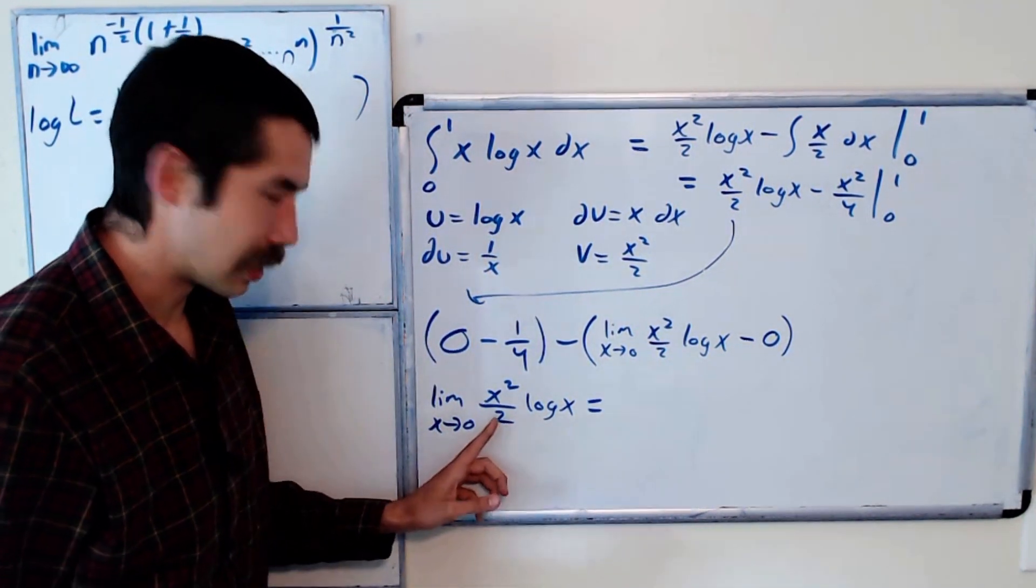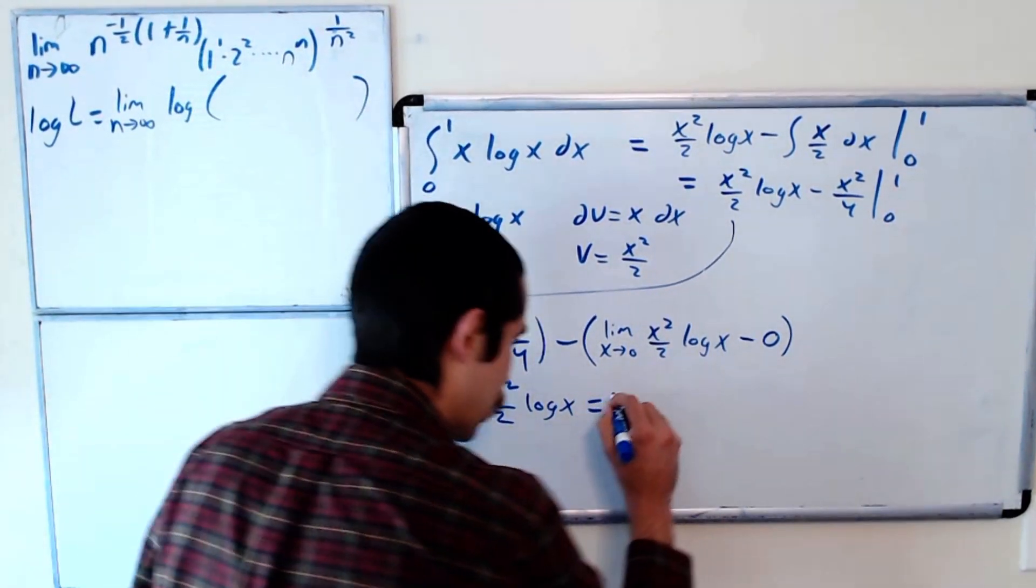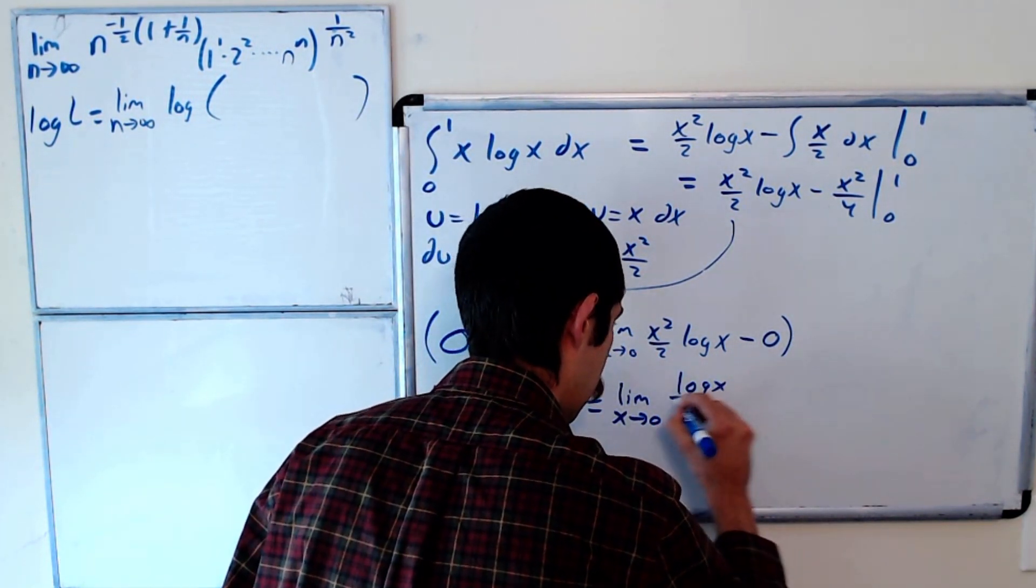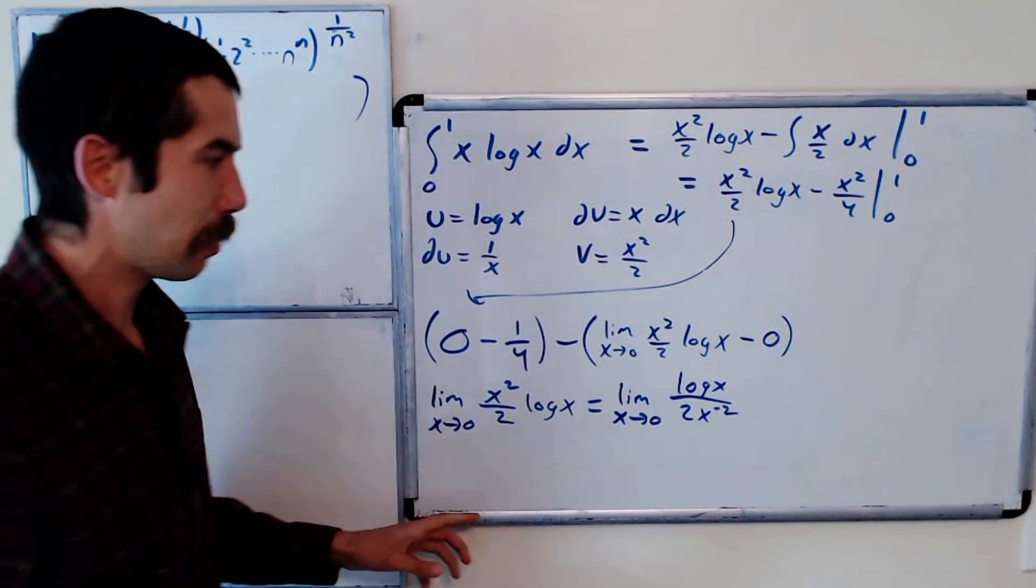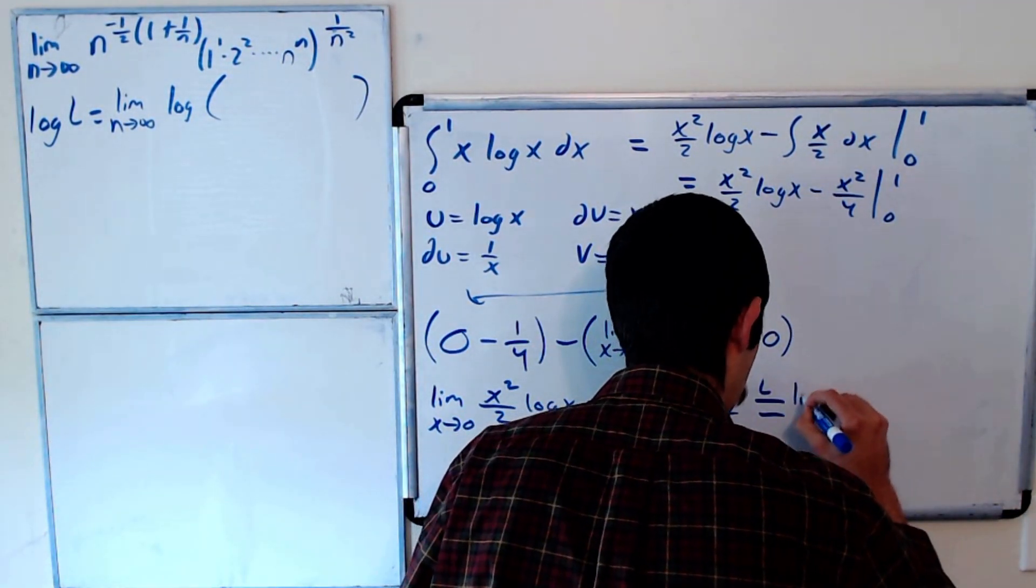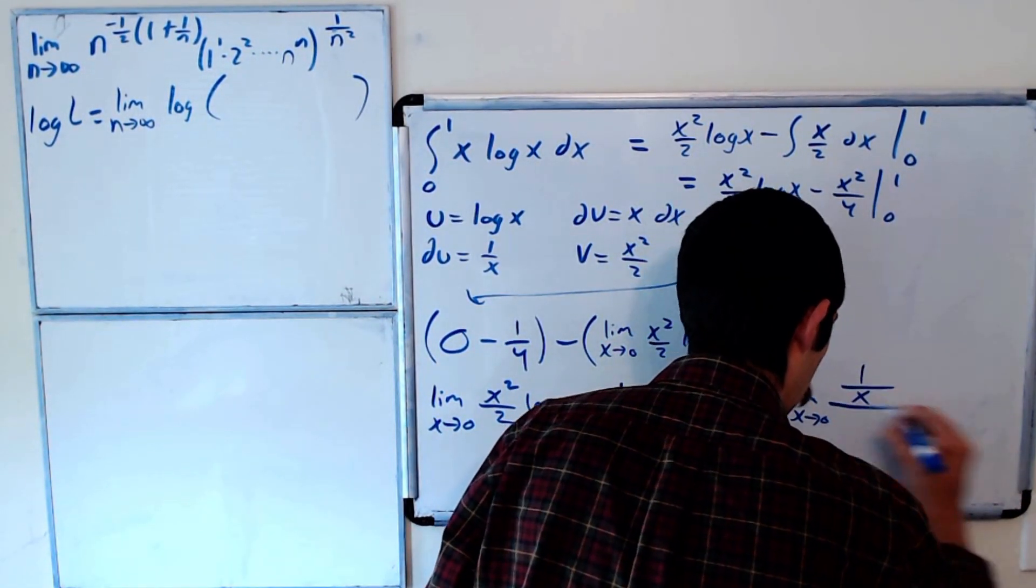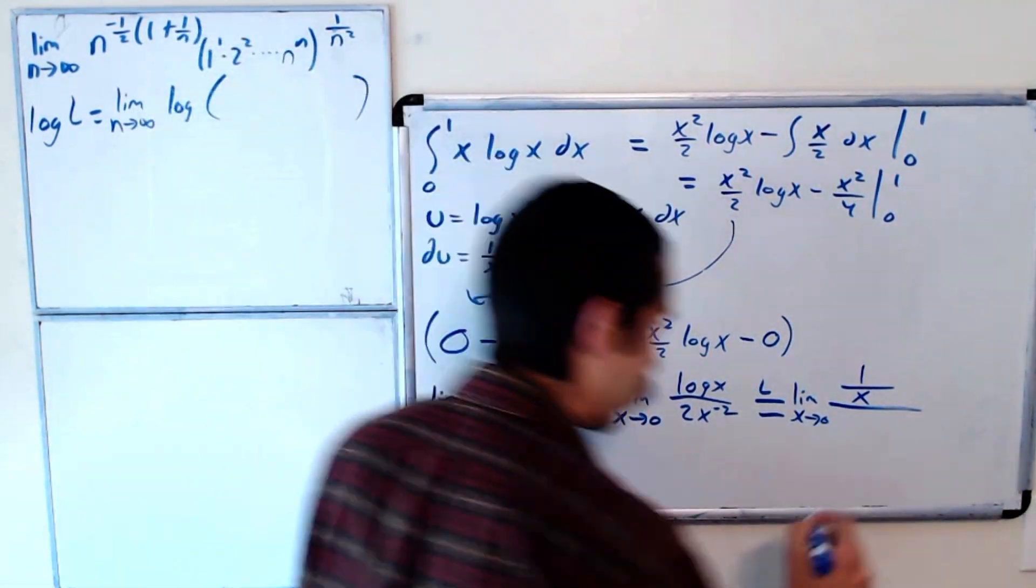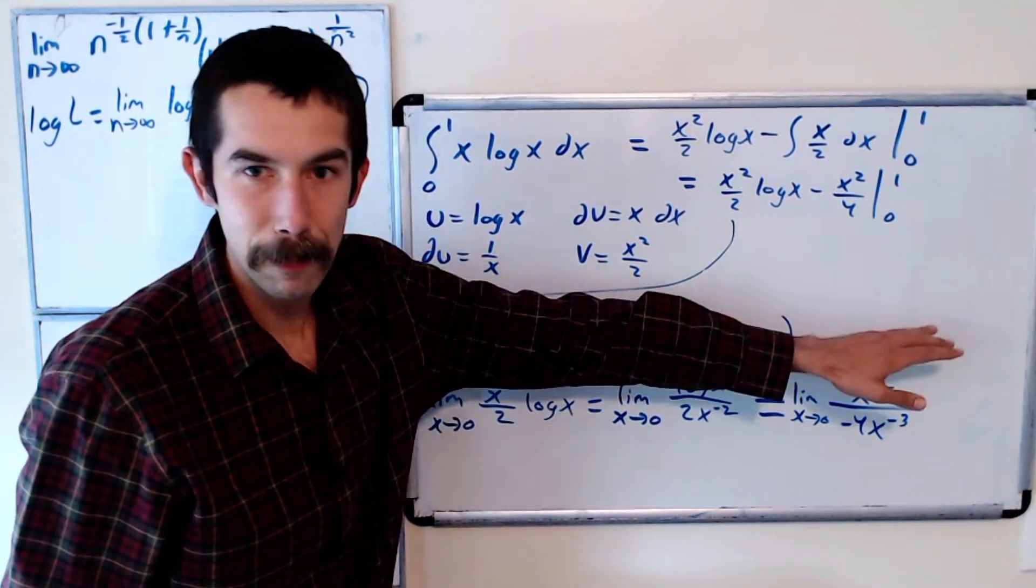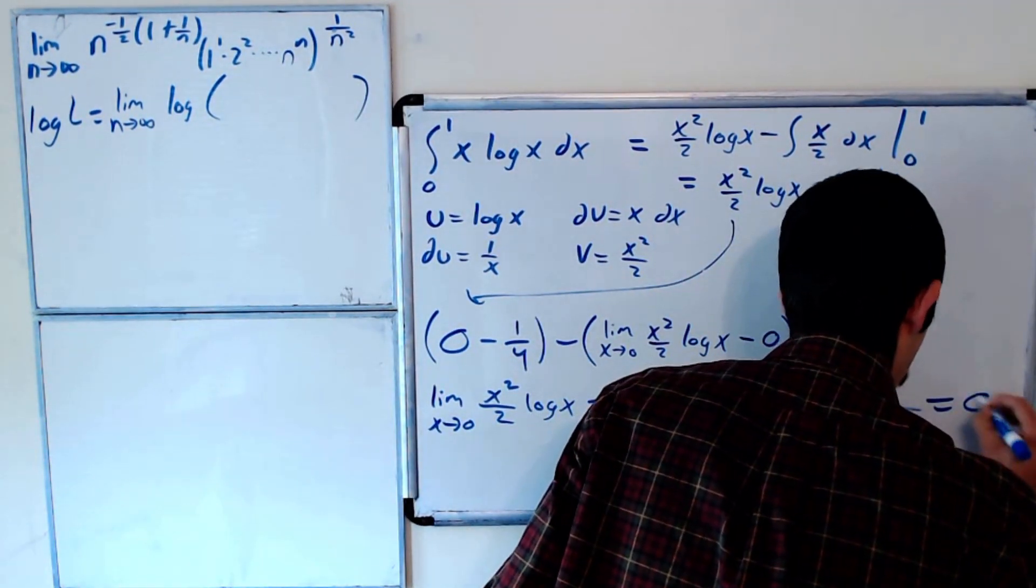Okay, so let's evaluate the limit as x goes to 0 of x squared over 2 log x. Well, this is an indeterminate form, right? It would be 0 times negative infinity if we just plugged in 0. So let's rewrite this as the limit as x goes to 0 of log x over 2x to the negative 2, right? Those are the same. And then we could use L'Hopital's rule. So this is equal to, by L'Hopital's rule, the limit as x goes to 0 of 1 over x over negative 4x to the negative 3. Okay, and so we would bring a 3 up into the numerator, it would cancel out with this x, and when we plug in 0, we get 0.